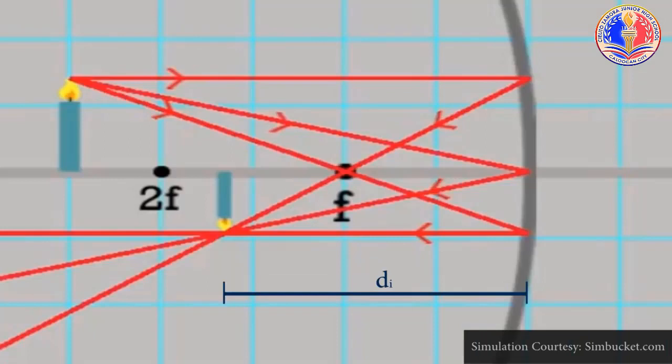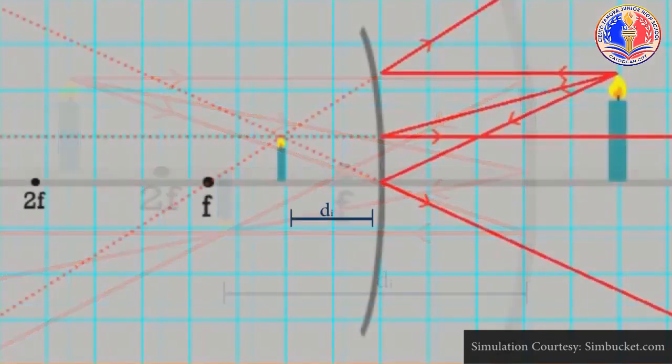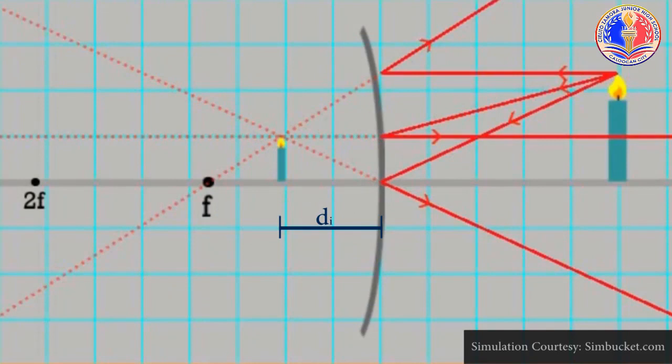Image distance is positive if the image is real and located on the object's side of the mirror. Image distance is negative if the image is virtual and located behind the mirror.